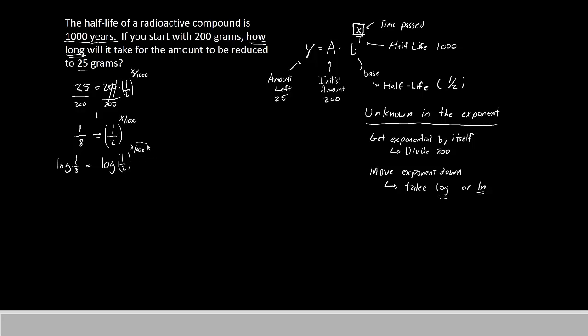So we will have log of 1 eighth equals log of 1 half raised to the x over 1,000. Now, because you have a log, the exponent can be moved down. We will move it in front of the log 1 half. So we will have log of 1 eighth equals x over 1,000 times log of 1 half.